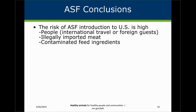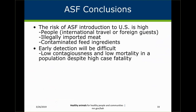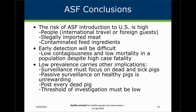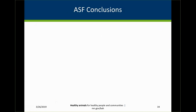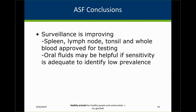To conclude, the risk of African Swine Fever introduction to the United States is high due to people, international travel, foreign guests, illegally imported meat, and contaminated feed ingredients. Early detection is going to be difficult given its low contagiousness and low population mortality despite a high case fatality. Surveillance must focus on dead and sick pigs — passive surveillance on healthy pigs is often unrewarding. Post every pig and investigate even low unexplained levels of death loss. Surveillance is improving: spleen, lymph node, and tonsil in addition to whole blood can now be submitted for testing. Oral fluids testing is also being considered.